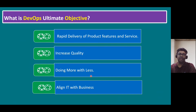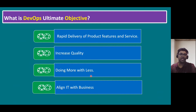Doing more with less: if Microsoft or Red Hat stopped releasing patches, every customer would have to fix issues themselves — more burden for customers. DevOps methodology, by releasing new patches, packages, updates, and upgrades, reduces the workload from the customer and operations team perspective. Aligning IT with business means aligning IT practices with the organization's business models.